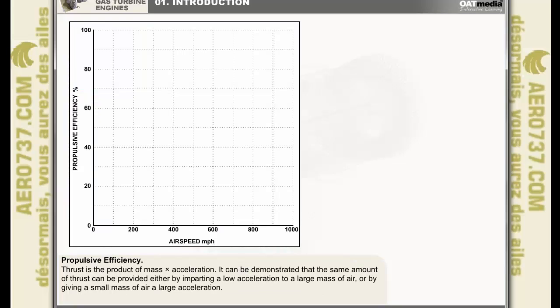We previously explained that thrust is the product of mass times acceleration. It can be demonstrated that the same amount of thrust can be provided either by imparting a low acceleration to a large mass of air or by giving a small mass of air a large acceleration. In practice, the former is preferred, since it has been found that the losses due to turbulence are much lower and the propulsive efficiency is higher.